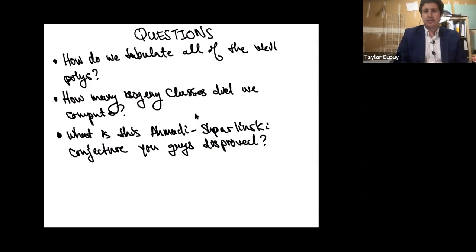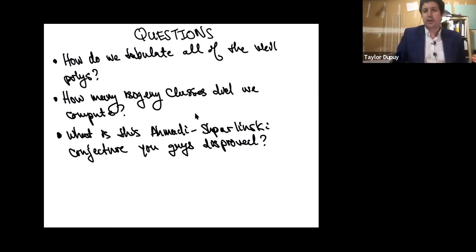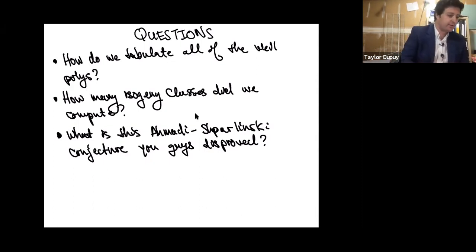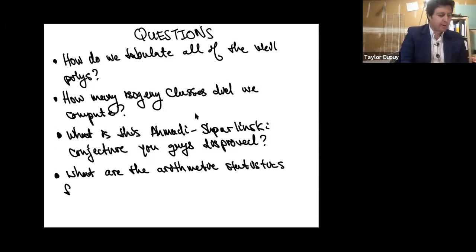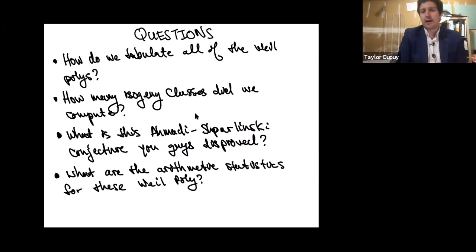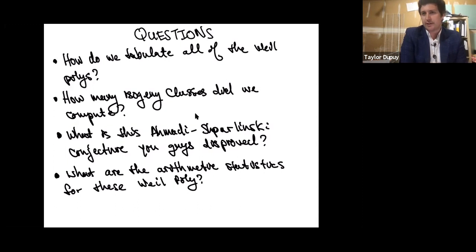Other questions we could ask: how many isogeny classes did we compute? There's this thing about angle ranks and there's a conjecture that we disproved. The conjecture is that Jacobians which are ordinary and geometrically simple have maximal angle rank. The angle rank is a measure of multiplicative relations between eigenvalues of Frobenius — it's an invariant between zero and G, and the lower it is, the more multiplicative relations you have between Frobenius eigenvalues. We found an explicit counterexample showing this isn't true.